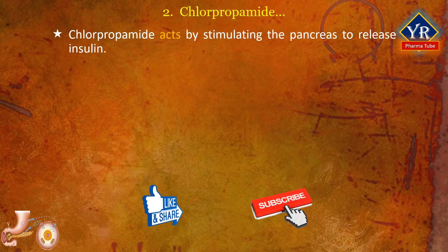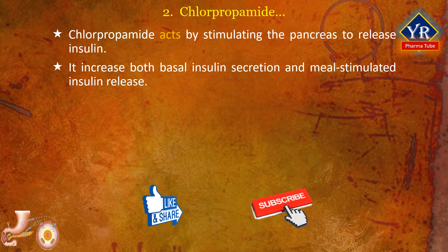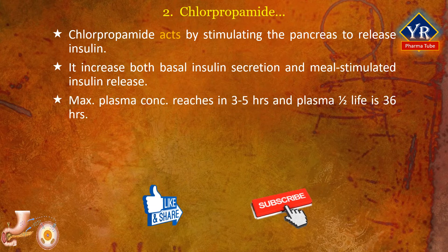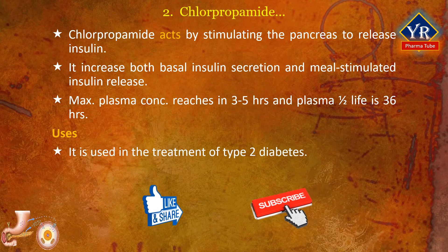Like other sulfonylureas, chlorpropamide acts by stimulating beta cells of the pancreas to release insulin. It increases both basal insulin secretion and meal-stimulated insulin secretion. Maximal plasma concentrations are reached at 3 to 5 hours and plasma half-life is 36 hours. This drug is more resistant to conversion to inactive metabolites than tolbutamide and as a result has a much longer duration of action. It is an oral anti-hyperglycemic agent used for the treatment of non-insulin-dependent diabetes mellitus, i.e. type 2 diabetes, and belongs to the sulfonylurea class of insulin secretagogues.